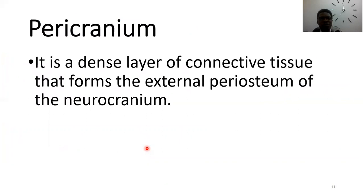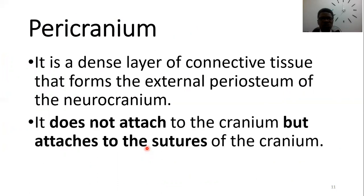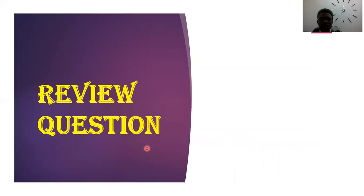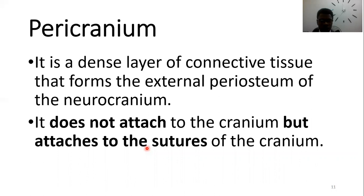The pericranium is the connective tissue layer attached to the neurocranium. However, it doesn't directly attach to the cranial bone itself — it attaches to the sutures on the cranium. So if there is an injury, the blood will stay within that pericranium area, forming a shape limited to the cranial bone concerned, without moving to other parts beyond the sutures.